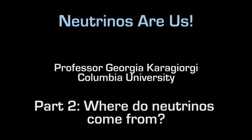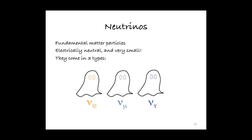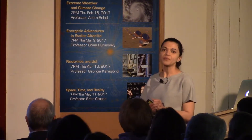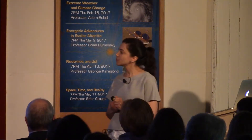Anti-neutrinos — they're anti-partners — could hold the answer as to why that is. Neutrinos are fundamental matter particles; they're electrically neutral and very, very small, and this actually makes them extremely hard to catch, to detect, and to study experimentally. But we know already — we've studied them enough to know that neutrinos come in three types.